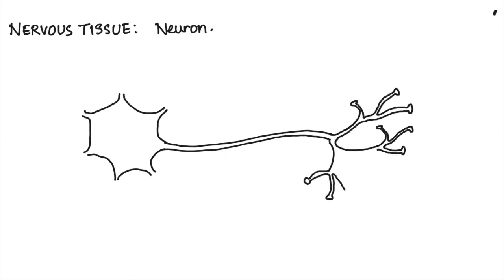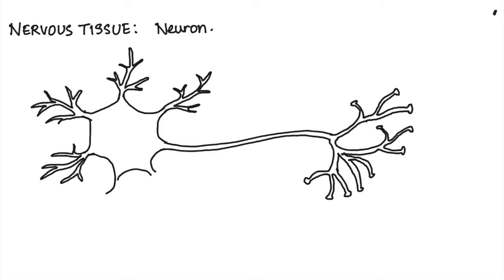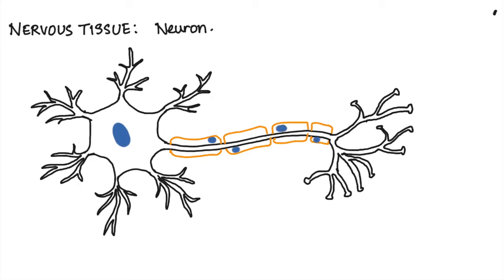The nervous system is responsible for receiving stimulus and conducting impulses. In order to receive the stimulus and conduct the impulses, the cell shows projections which are small and long. Now let us label the parts to understand this better.